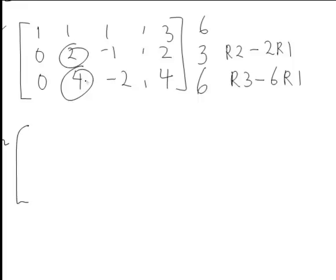So 4 minus 4 is 0. We are clearly going to need here row 3 minus 2 row 2. So the rest of our augmented matrix is the same as before.